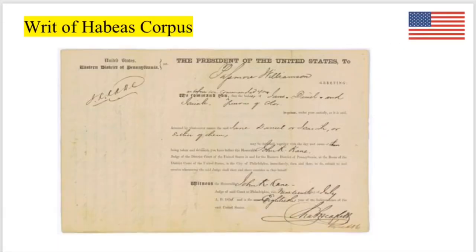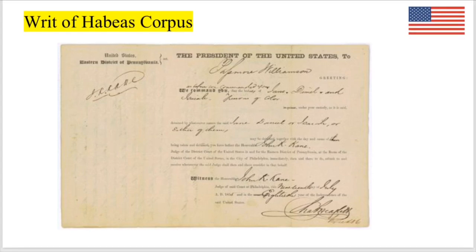Right when this war started, Lincoln suspended the writ of habeas corpus in Maryland and other states with strong pro-Confederate sentiment. Habeas corpus was a constitutional right that people could not be arrested without being informed of the charges against them. Lincoln suspended this so people could now be arrested without being told the charges against them. During the war, tens of thousands were arrested on suspicion of aiding the enemy, and this soon led to a big debate about the constitutionality of it. Lincoln did this through executive order because Congress was not in session at the time, and he felt it was a critical thing that needed to be done.